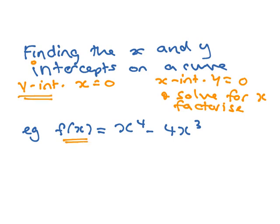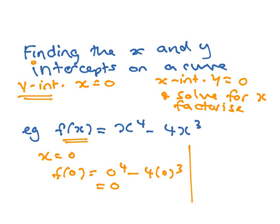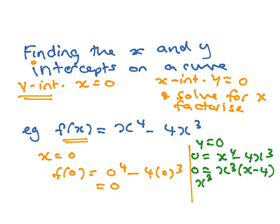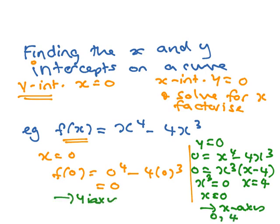So the y intercept: if you're looking at this curve when x equals 0, if you put 0 in where the x is, you end up with 0. So the y intercept is at 0. And then if you put in y equals 0, you get 0 equals x⁴ minus 4x³. You then have to factorize it. So x cubed is a common factor, giving x cubed times (x minus 4). So x cubed equals 0 means x equals 0, and x minus 4 equals 0 means x equals 4. So it intercepts the x axis at 0 and 4, and intersects the y axis at 0.